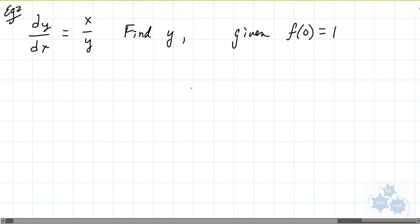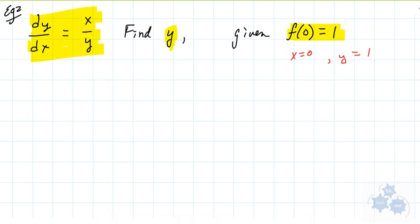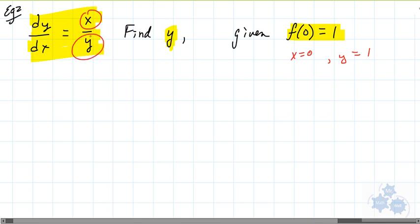Here's our second example. We're given the differential equation dy over dx equals x over y. The derivative of y is given as this general expression, and we need to find what that original equation is. We need to separate the variables and integrate. We have given initial conditions: x equals 0 and y equals 1.